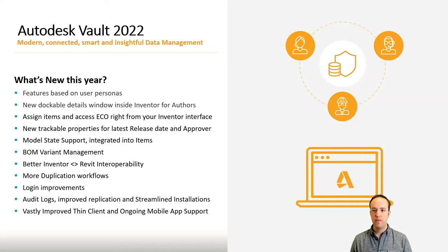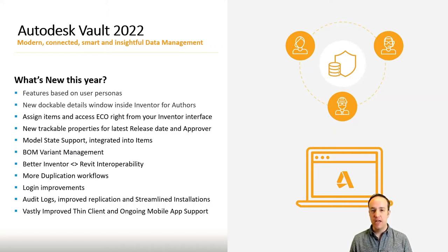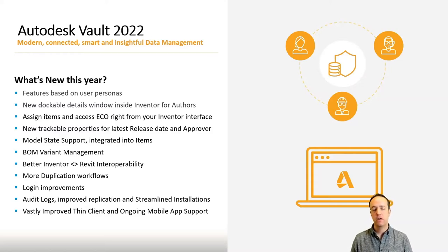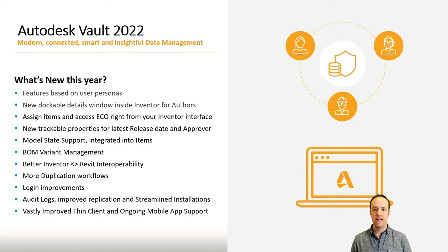We've got some fantastic interoperability functionality. A little bit later on this morning I'm going to look at the Inventor to Revit link and how that works this year. Vault has better understanding now of that link and how to handle those Revit documents that are linked inside of those Inventor IAM assembly files. This year it's able to better archive off old versions of the model and handle that model a lot more easily.